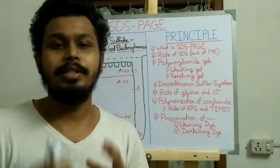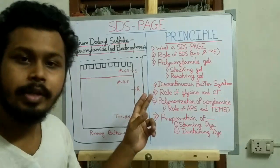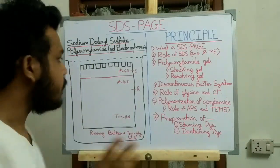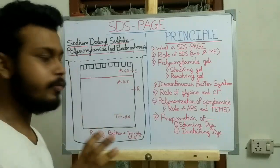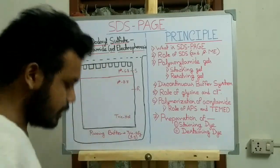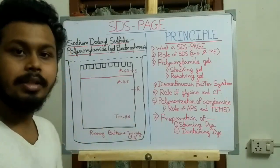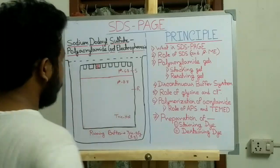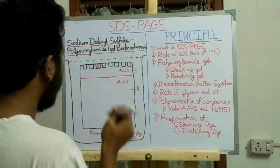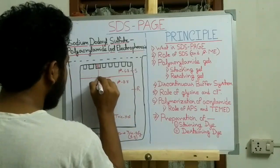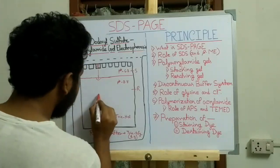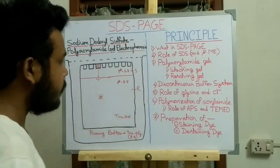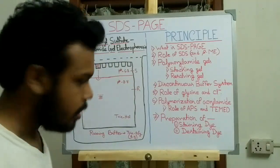Why do we use two different kinds of gel and why do we use a discontinuous buffer system? If we don't use the stacking gel and use only the resolving gel, when we add protein into the wells, the proteins will be present in a discrete manner — the distance between them is high. When they enter directly into the resolving gel they will give a smeared band.